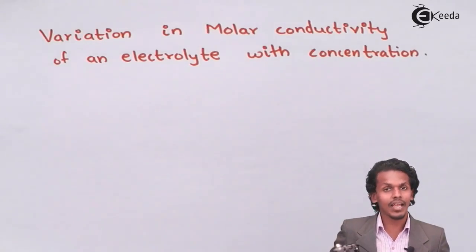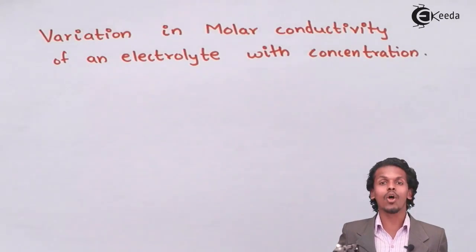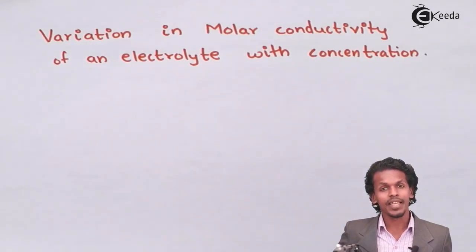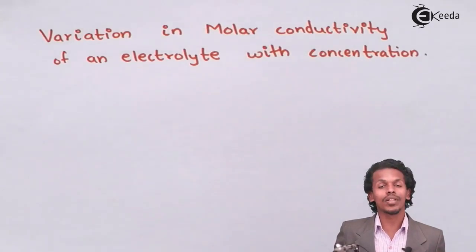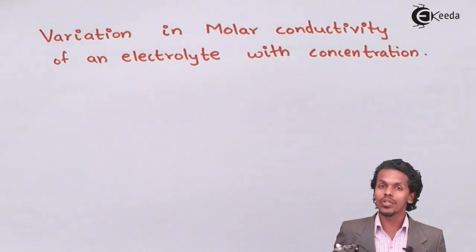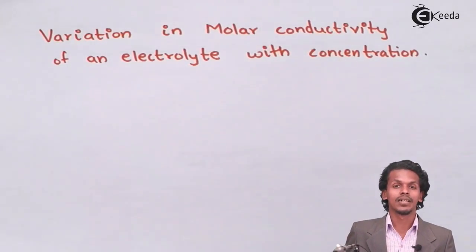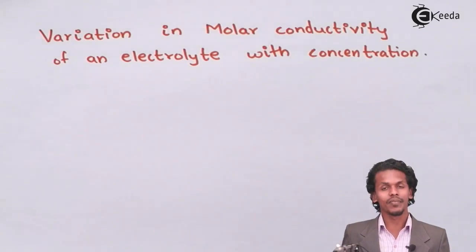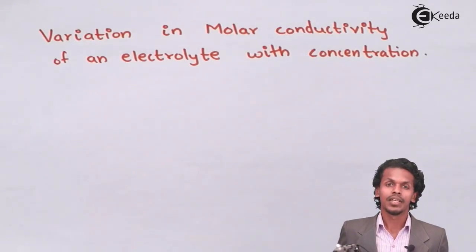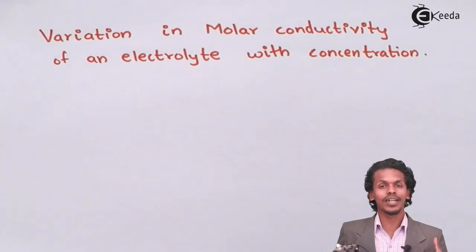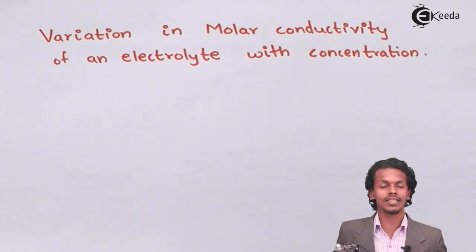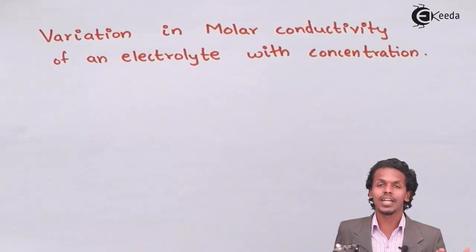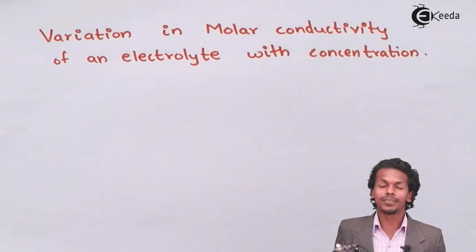As we have initially learned a lot about molar conductivity, it depends on the number of moles of a solution — that could be of an electrolyte from which electricity can be passed. It depends on one mole of the electrolyte that is present in the solution.